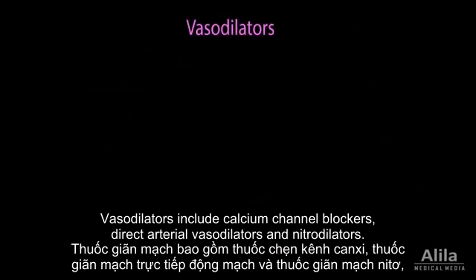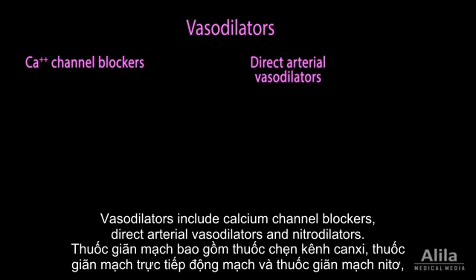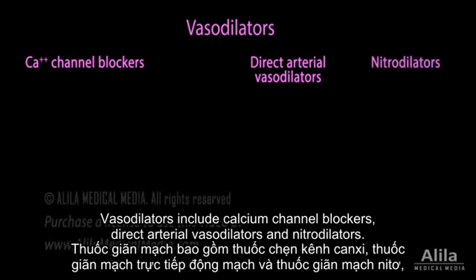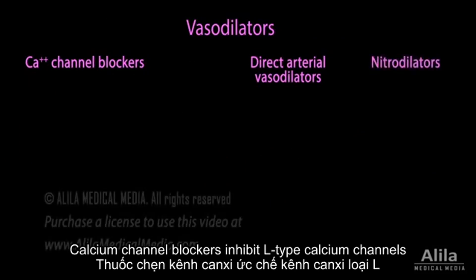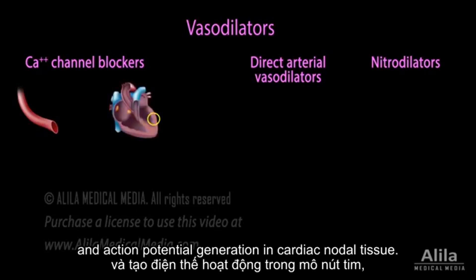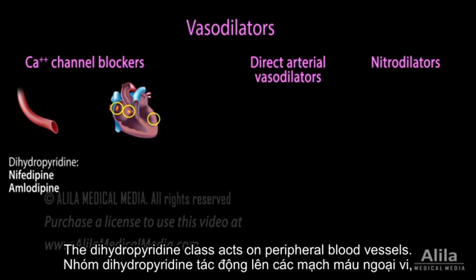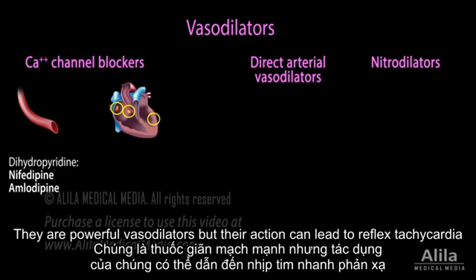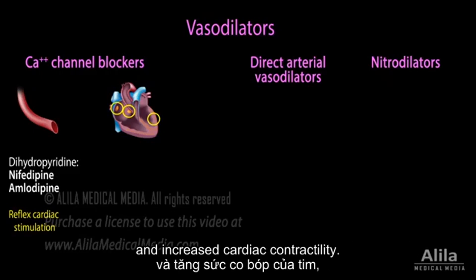Vasodilators include calcium channel blockers, direct arterial vasodilators, and nitrodilators. Calcium channel blockers inhibit L-type calcium channels that are responsible for smooth muscle contraction, cardiac myocyte contraction, and action potential generation in cardiac nodal tissue. The dihydropyridine class acts on peripheral blood vessels. They are powerful vasodilators, but their action can lead to reflex tachycardia and increased cardiac contractility.